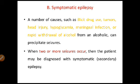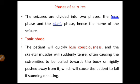An important point: if there are two or more seizures occurring, then only can you consider it as a diagnosis of symptomatic epilepsy. So those are the two types of epilepsy. Now we'll see how many types and phases of seizures there are.